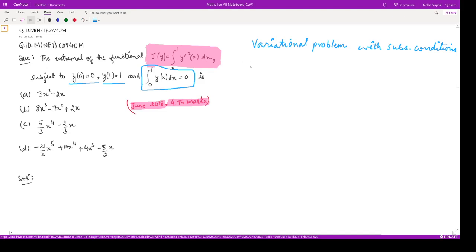What is it? Suppose this is f and this is g. Then correspondingly the Euler-Lagrange equation has the form: f_y - d/dx(f_y') + λ(g_y - d/dx(g_y')) = 0, where λ is a constant and has to be determined.